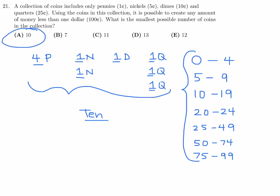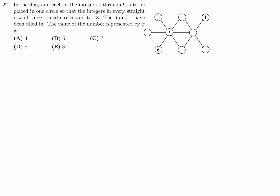In the diagram, each of the integers 1 through 9 is to be placed in one circle so that the integers in every straight row of three joined circles add to 18. The 6 and 1 have already been filled in. The value of the number represented by x is what we need to find. We are working only with integers 1 through 9, and 1 and 6 have already been placed.